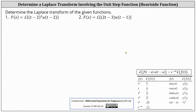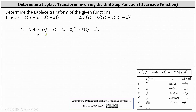For number one, we have the Laplace transform of the square of t minus two, times u of the quantity t minus two. Because of u of the quantity t minus two, we know a is equal to two. We also know f of the quantity t minus two equals the square of t minus two, which makes it easy to find f of t. If f of the quantity t minus two equals the square of t minus two, then f of t is equal to t squared. Therefore, we can now apply the shifting property.